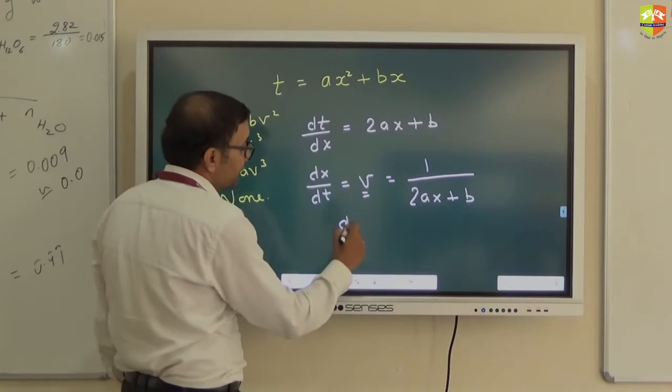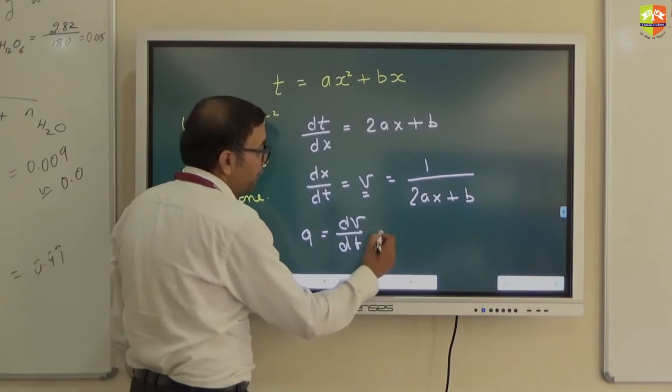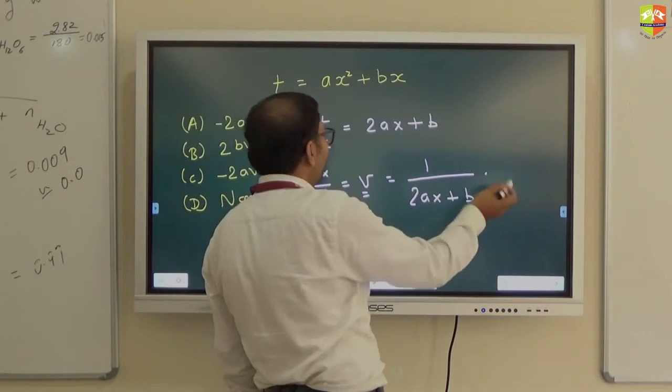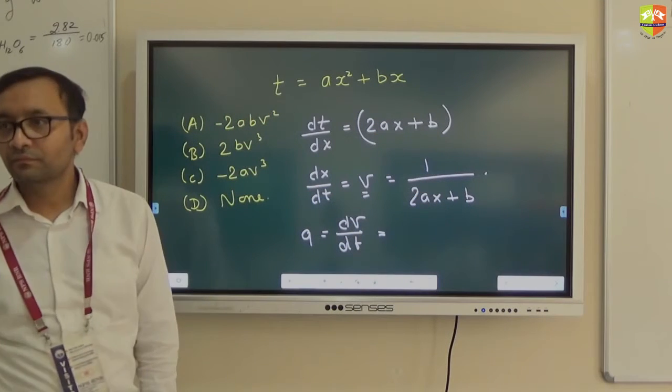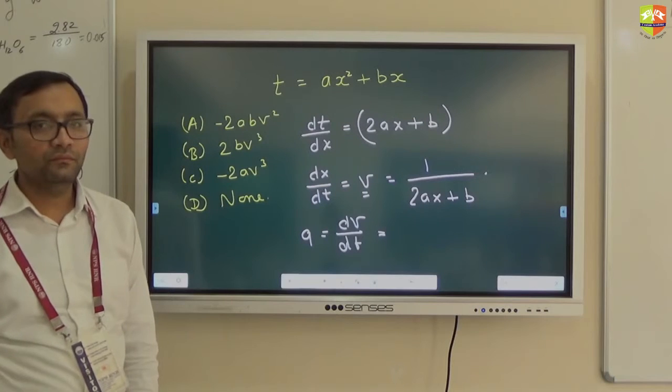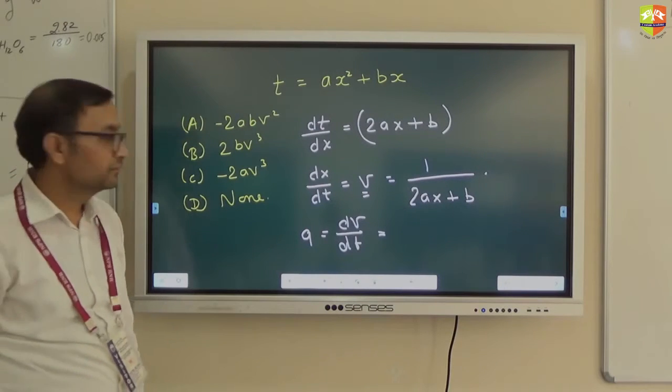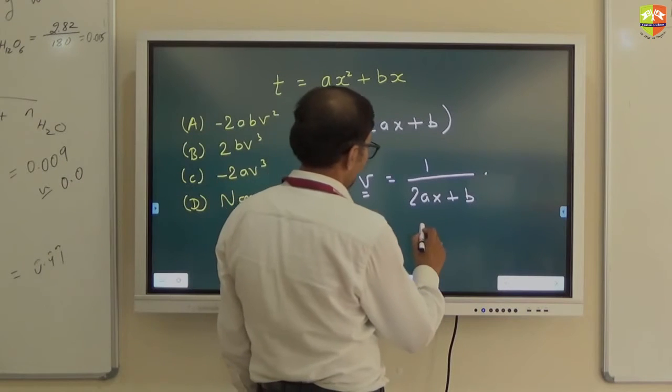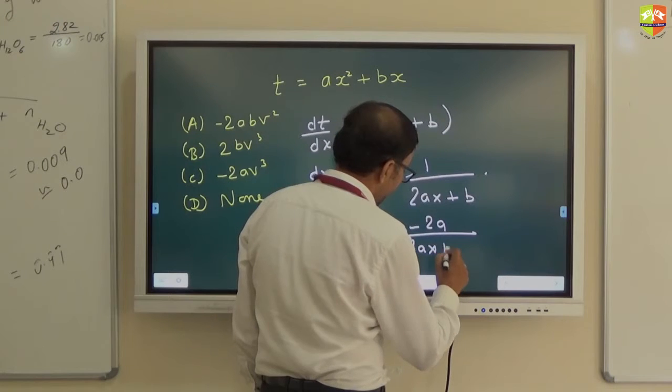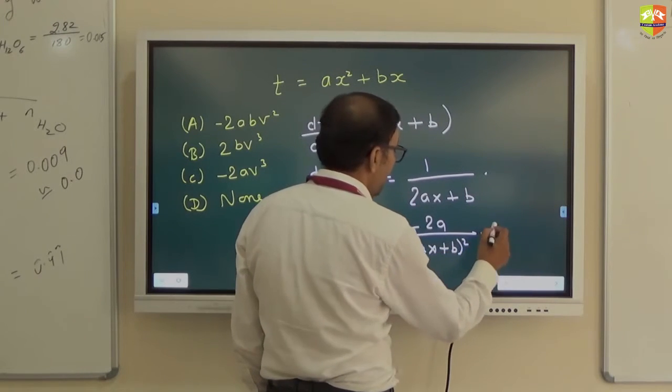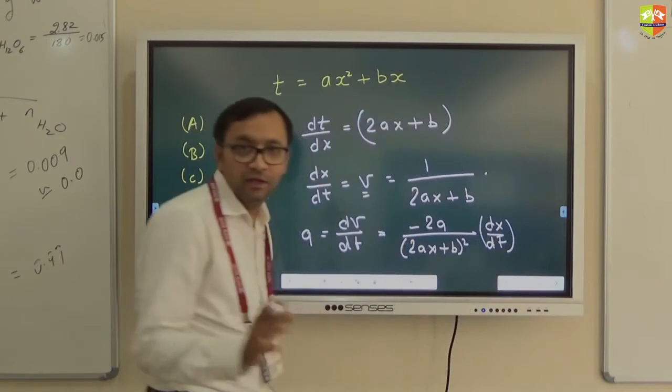Now I will differentiate velocity with respect to t to get the acceleration. When you differentiate, dx by dt will also come. That is the velocity which is inverse of this. Understood? Let's do it. Minus of 2a divided by 2ax plus b whole square into dx by dt. This is what you will get.